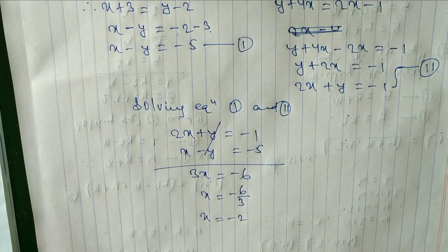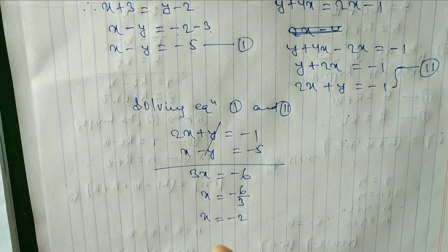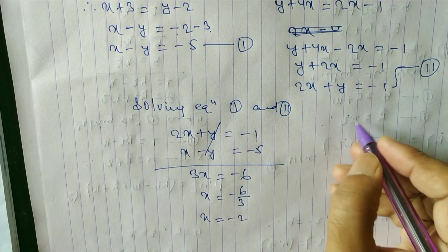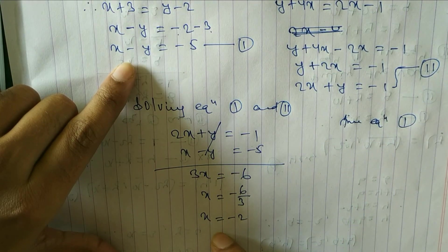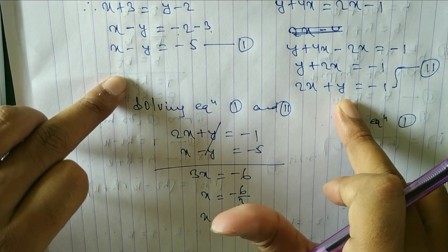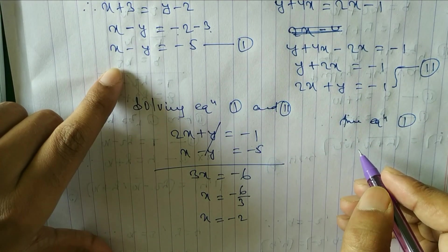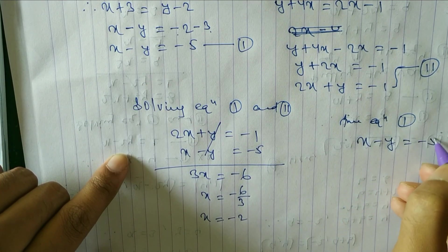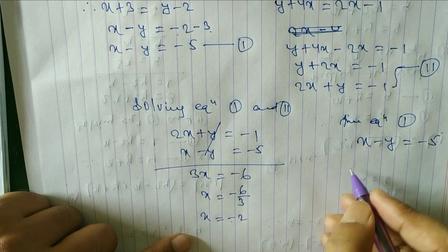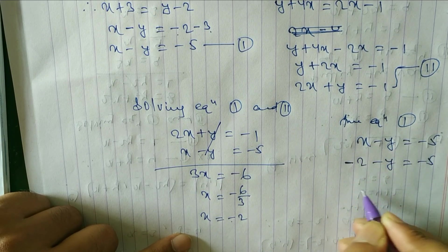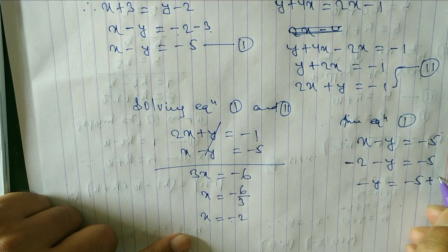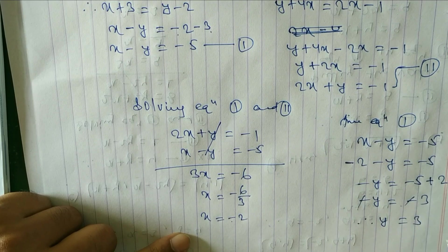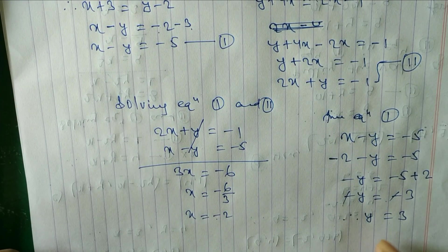Now find y by substituting x equal to minus 2 into equation 1: x minus y is equal to minus 5, so minus 2 minus y is equal to minus 5, giving minus y is equal to minus 3, so y is equal to 3.